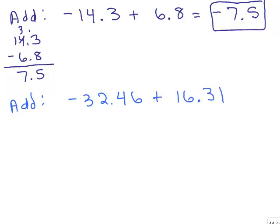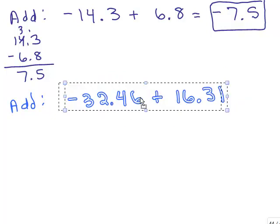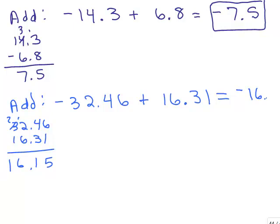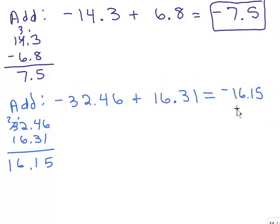We've got negative 32 and 46 hundredths plus 16 and 31 hundredths. We're adding a negative number and a positive number, so the rule is the same. Are there more negatives or positives? There are more negatives, so the answer is going to be negative — negative what? We take their difference: that's 5, 1, 6, 1 — 16.15. So the answer is negative 16 and 15 hundredths.